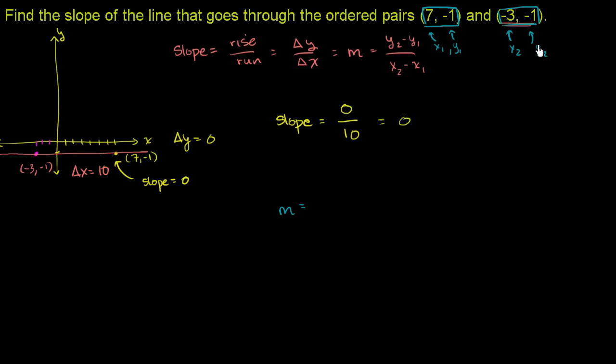the change in y. y2 minus y1. So it's negative 1 minus negative 1. All of that over x2, negative 3, minus x1, minus 7.